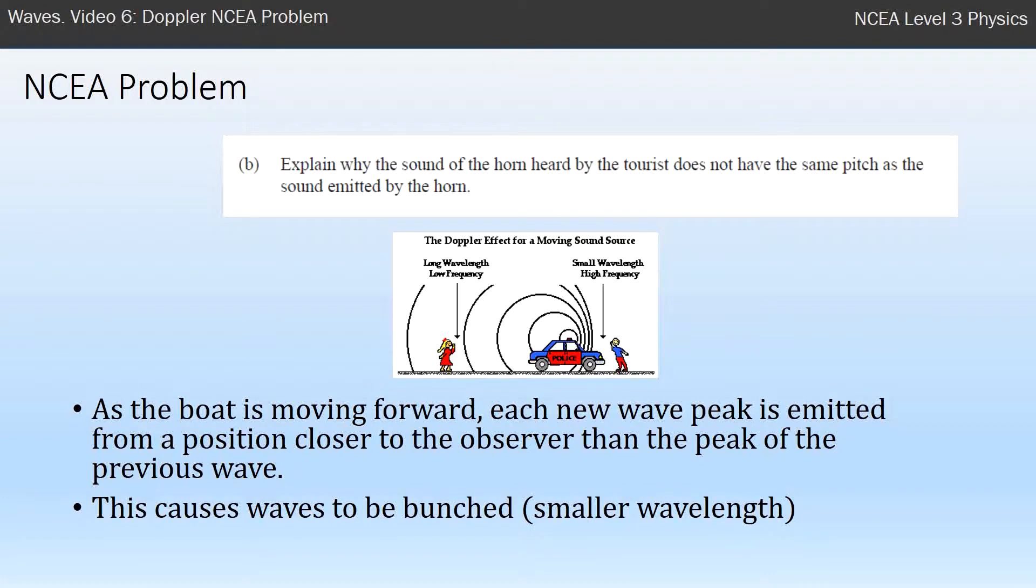And because they're bunched, they have a smaller wavelength, the smaller gap between crests or peaks. And a smaller wavelength is a higher frequency that the observer hears. So that's my explanation.